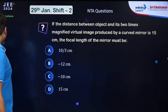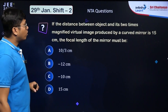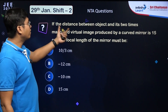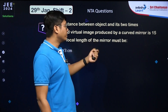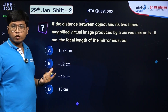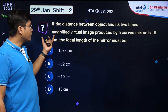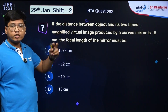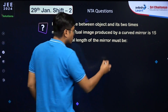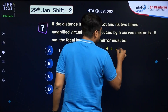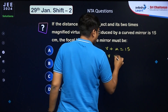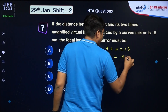The first question says: if the distance between the object and its two-times magnified virtual image produced by a curved mirror is 15 cm, then find the focal length of the mirror. The object distance and image distance total 15 cm, so v plus u equals 15, giving v = 15 − u.